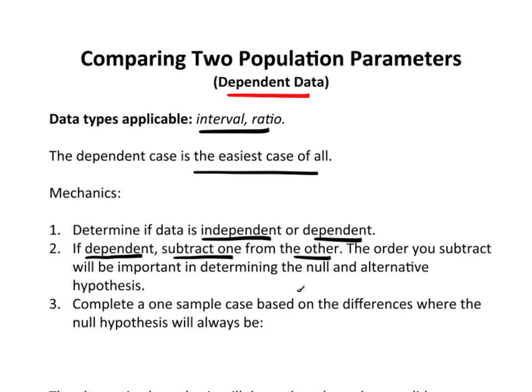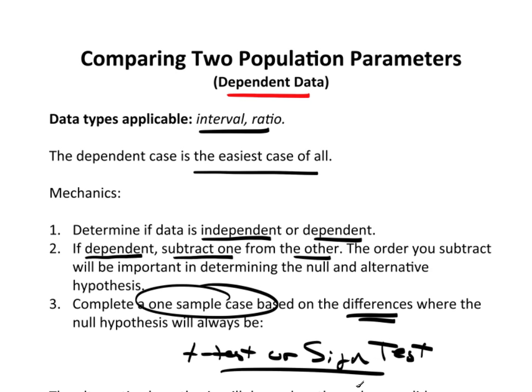Remember the whole thing with the Vons versus Albertsons? The order that I subtracted would tell me what should happen if the alternative hypothesis is actually true. Once we do the subtraction, we will work only with the differences, and we're going to complete a one sample case. That means either a t-test or a sign test, depending on the violation of the assumptions.